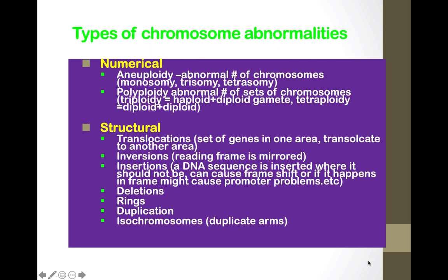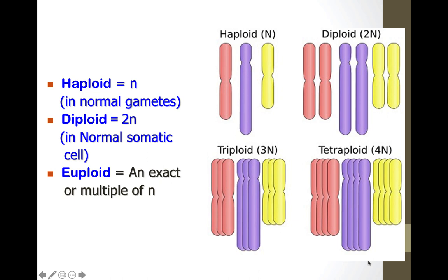We talked slightly about the numerical problems with chromosomes — that is aneuploidy, which is the abnormal number of chromosomes, either an addition or a loss of a chromosome. You can have monosomy, which is losing one chromosome; trisomy, a duplication of one chromosome; tetrasomy; and polyploidy, which is an abnormal number of sets of chromosomes. Structural problems include translocations, inversions, insertions, deletions, rings, duplications, and isochromosomes.